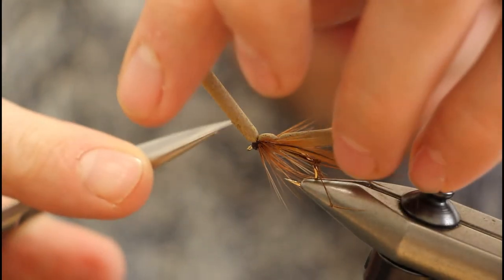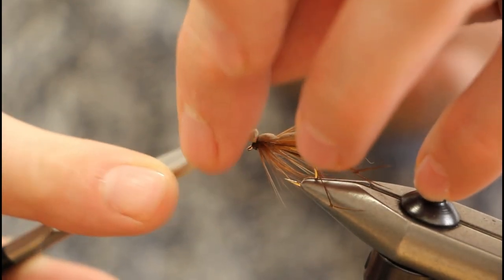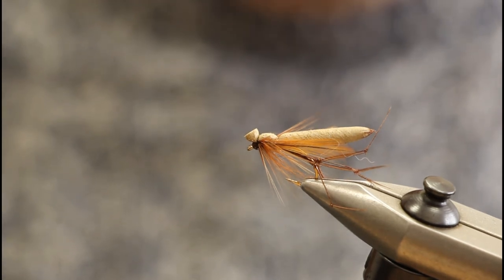Just remove the waste on the thread and then just chop the tube down. So that's the Fulling Mill Real Daddy.